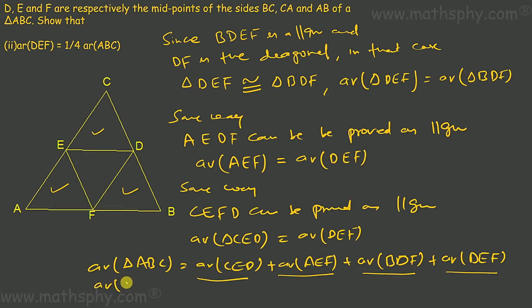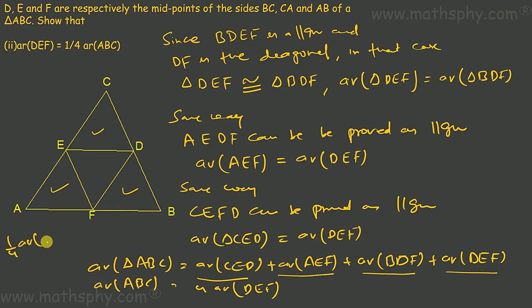Since DEF equals each of those three surrounding triangles, the three surrounding triangles can each be replaced with DEF. So I have DEF plus DEF plus DEF plus DEF, which means 4 times area of DEF equals area of ABC. Therefore, area of DEF equals one fourth of area of triangle ABC. Done.